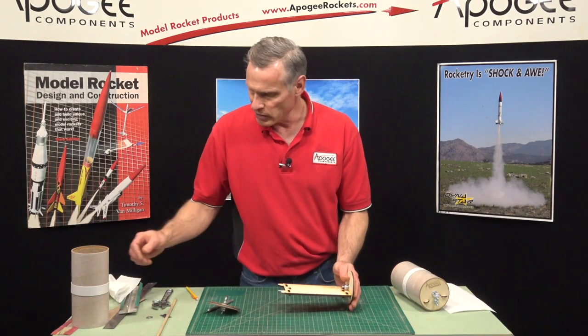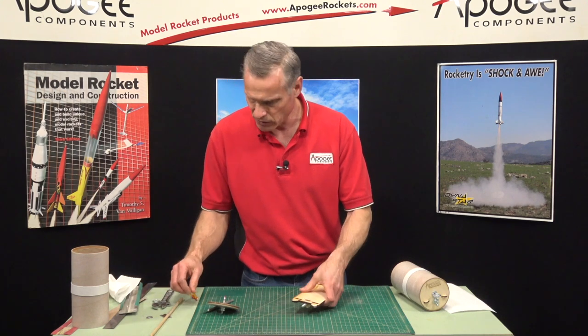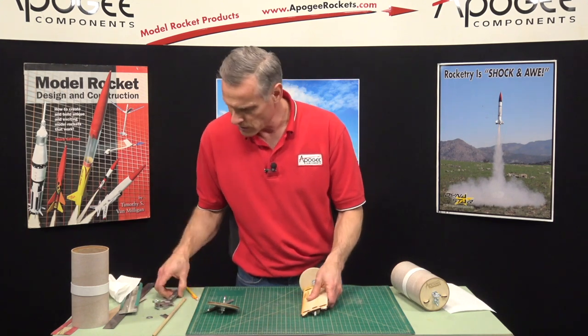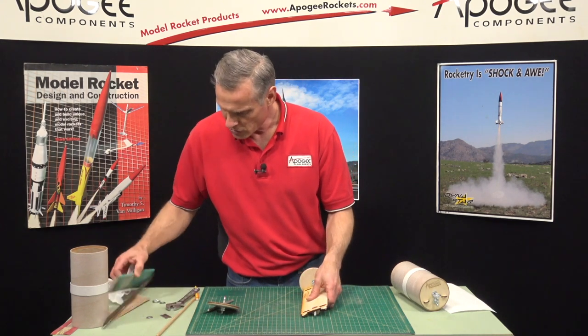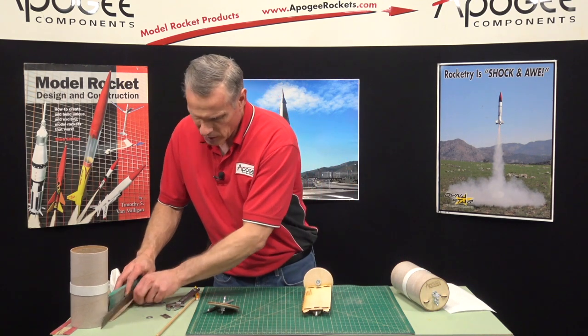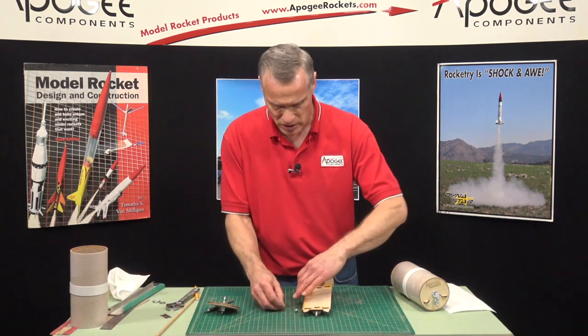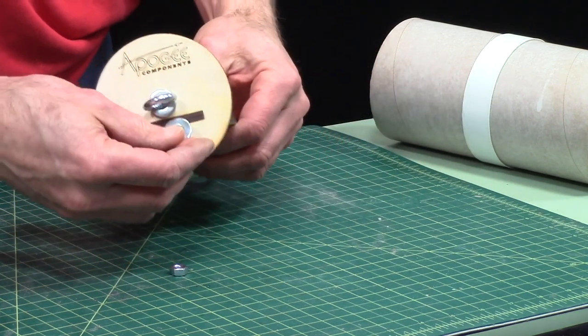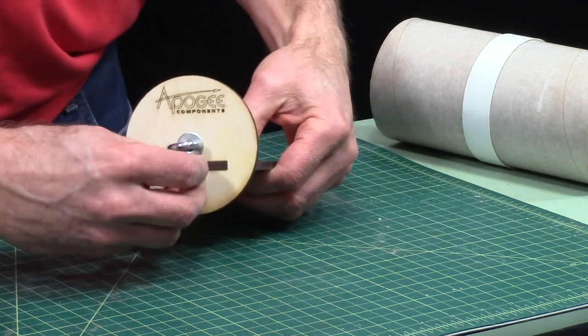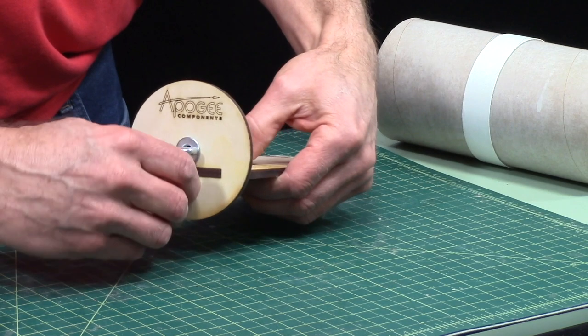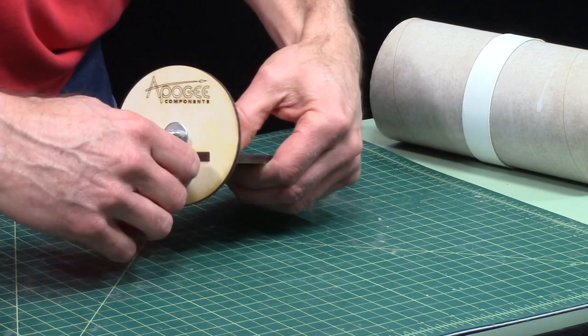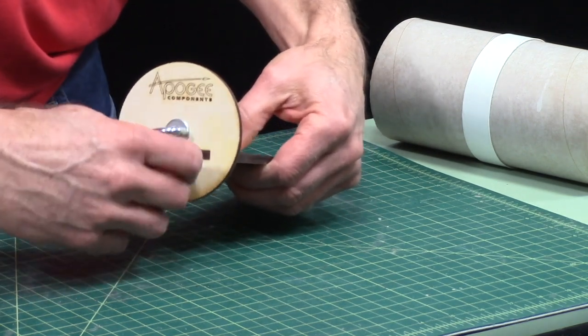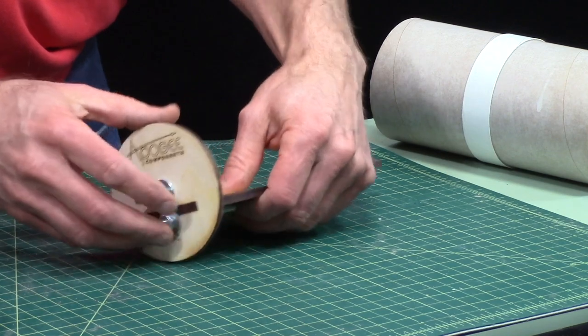We're getting really close to being done. The next thing I want to do is one more bolt and a washer. So I'm going to put this on the end where the bulkhead is already at. This is going to lock that one down or keep it from sliding that way. Like that.